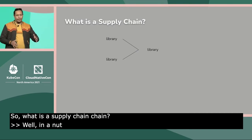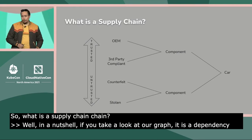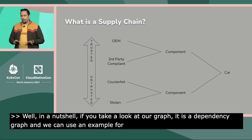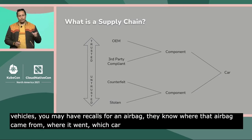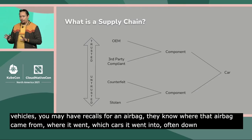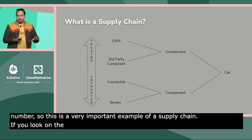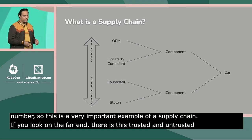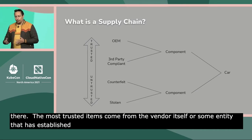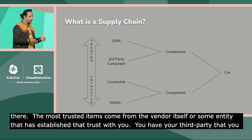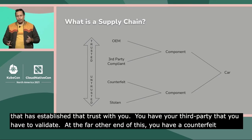What is a supply chain? In a nutshell, it's a dependency graph. Using a physical example: with vehicles, there are often recalls for an airbag or some component — manufacturers know where that airbag came from, which cars it went into, often down to the VIN number. Looking at a trust spectrum, the most trusted items come from the vendor itself; at the far other end you have counterfeit or stolen items where you can't establish provenance and have no idea if it will break on you or report back information.